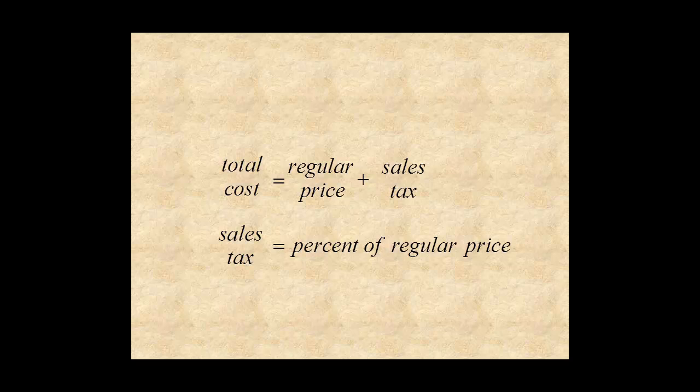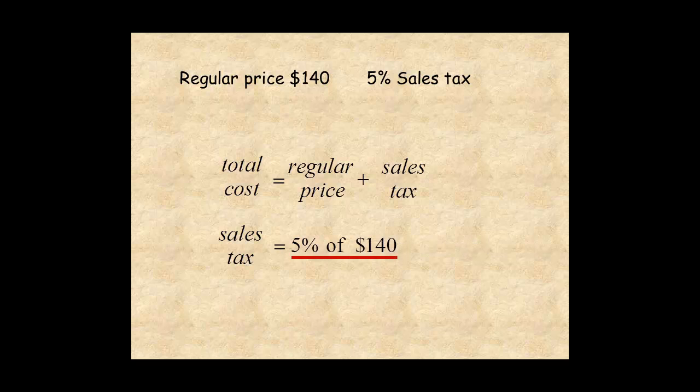For example, if you have a $140 item with a 5% sales tax, first calculate the sales tax: 5% of 140, or 0.05 times 140, which is $7.